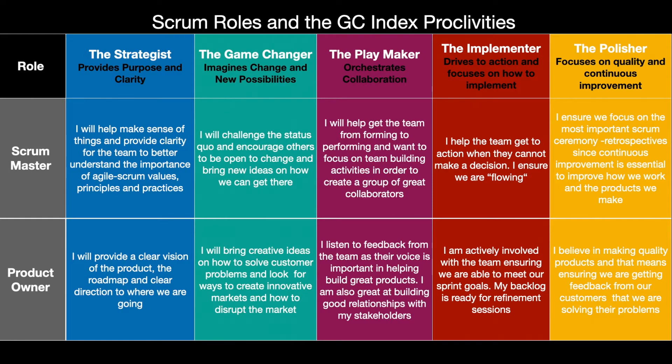Our first section is going to cover the Scrum roles. I'm going to focus on Scrum Master and Product Owner in this scenario. I'm not going to go through each one — this will be available for you to download. I just wanted to drive home the point that it's not a one-size-fits-all and there are different ways that people want to come to the table and contribute. The GC Index allows the ability to measure individuals' impacts — we call these proclivities. There are five of them.